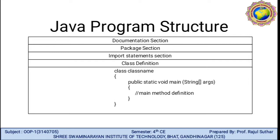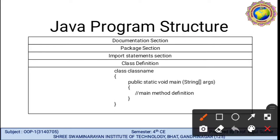The most important topic is the Java programming structure. The structure covers several portions: first is the documentation section, then the package section, import statement section, and class definition — which is the body. The body covers the class name, the name of the program, and the main method: public static void main(String[] args).